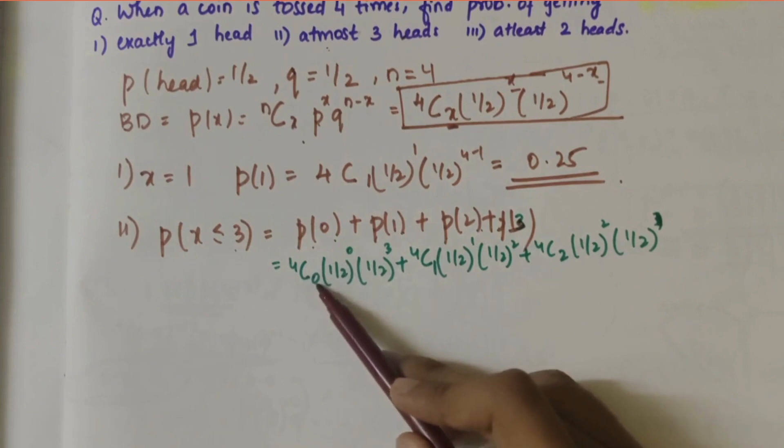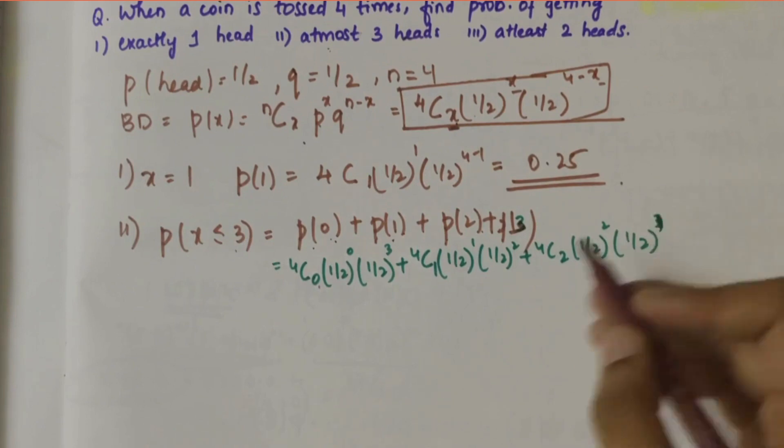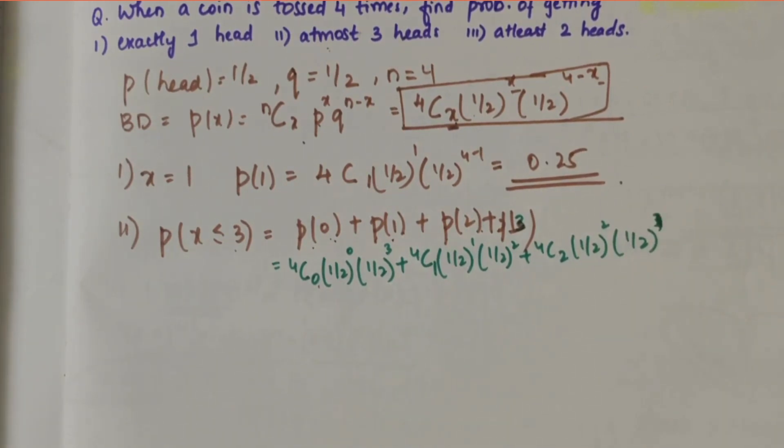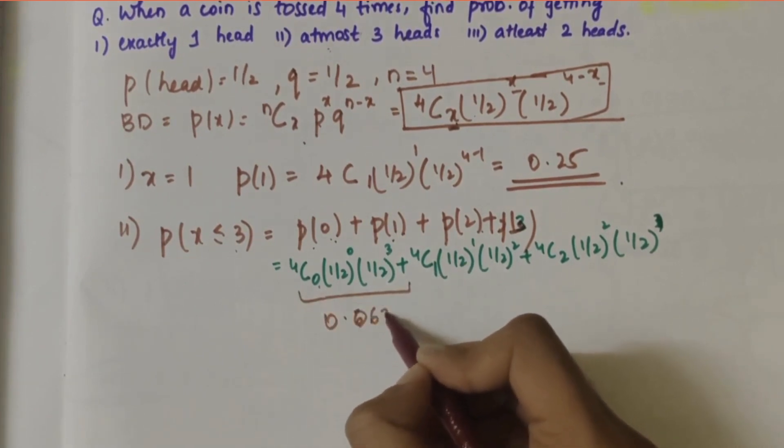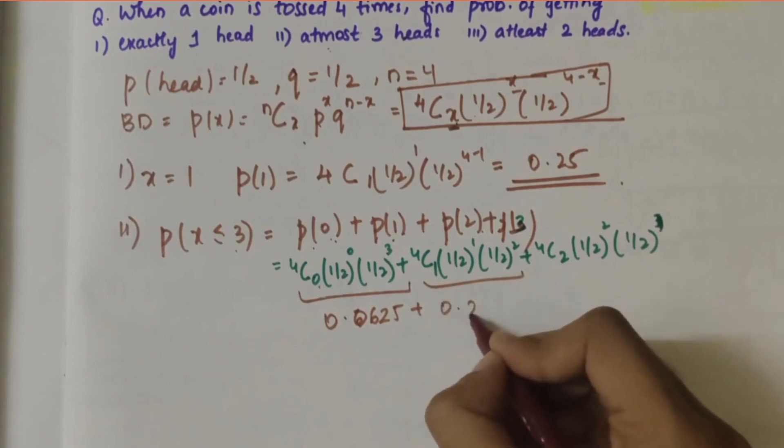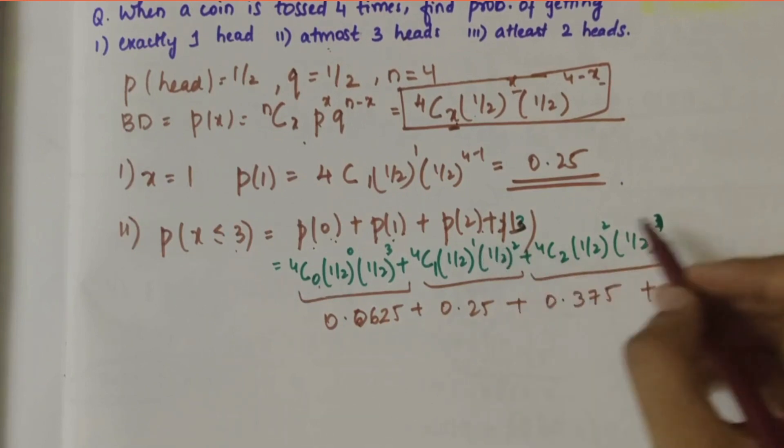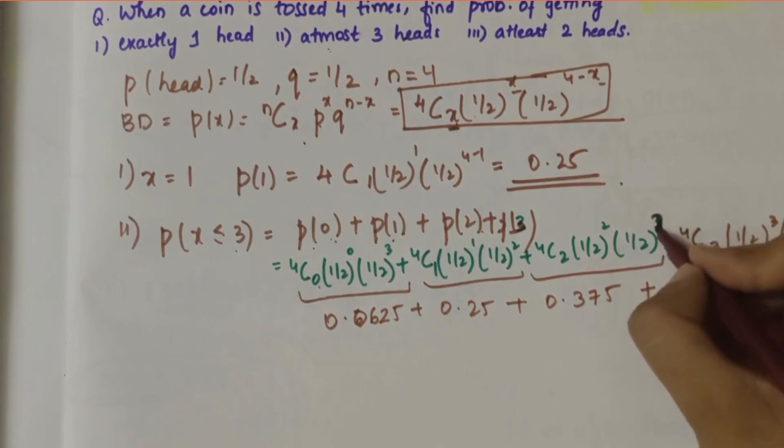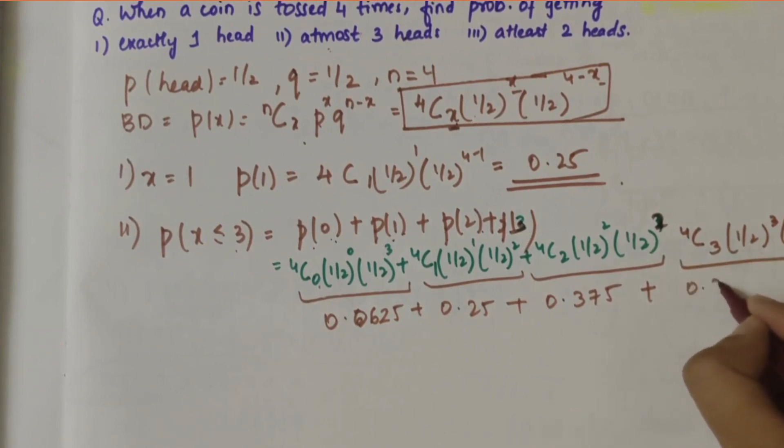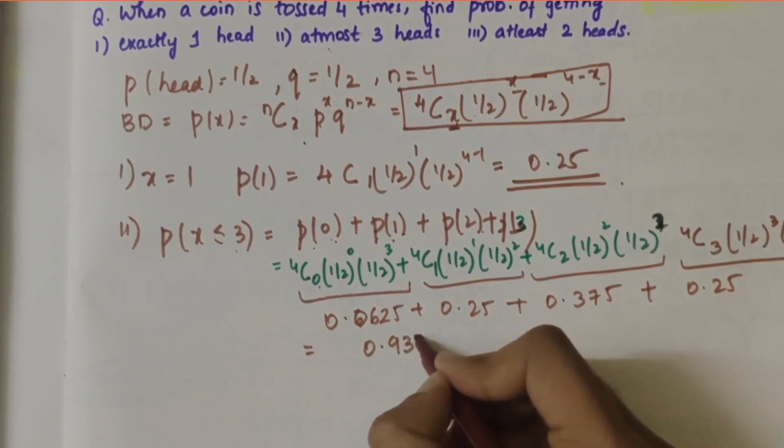We substitute x = 0, 1, 2, and 3 into the equation. After substituting, P(0) = 0.0625, P(1) = 0.25, P(2) = 0.375, and P(3) = 4C3 × (1/2)^3 × (1/2)^1 = 0.25. When you add all of these, you get 0.9375.